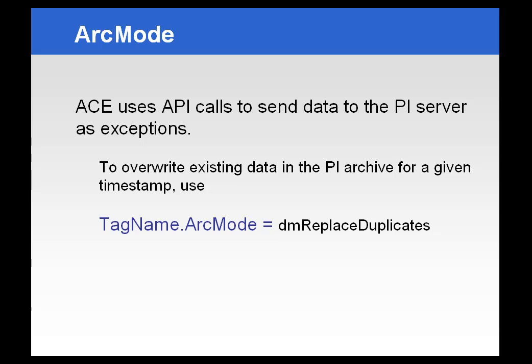ACE will normally use API calls to send data to the PI server as exception data — the same process that interfaces use. If for some reason you want to force data written to the PI archive for a specific timestamp and want it to overwrite anything already there, you can use the tag name arc mode equals DM replace duplicates function in order to force that behavior.